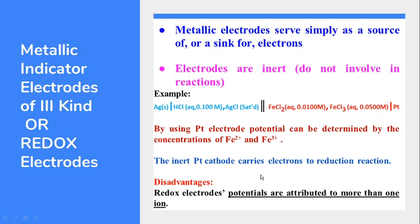One disadvantage of redox electrodes is that if more than one reducible species is present in the aqueous solution, the potential generated at the solution-electrode interface responds to all those species. Therefore, interference from multiple reducible species is significant, making the recorded potential erratic when more than one reducible species is present.